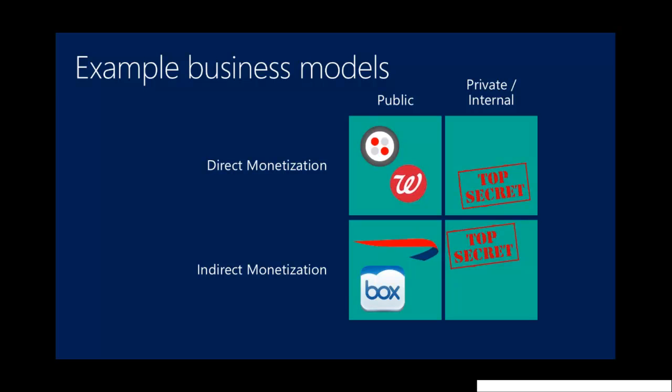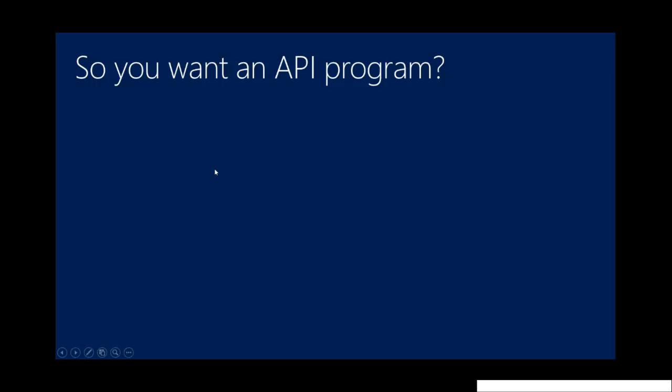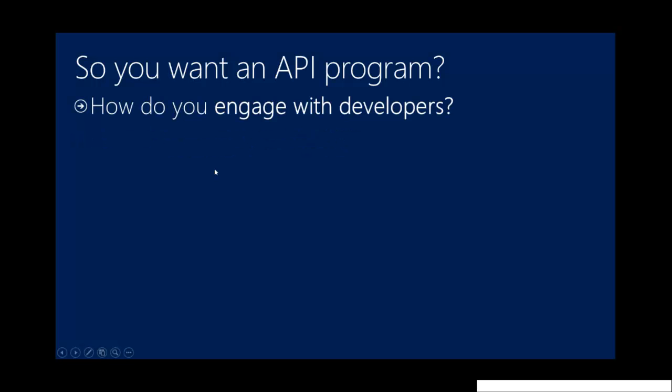So what we're seeing is huge interest in API programs in terms of providing APIs that are easy to use, that developers can be very successful with internally inside organizations. Our own MSIT is very interested in doing this. Those are some examples of API business models. And the minute you decide that you want an API program, you basically open a can of worms — there are a lot of challenges that you need to solve.